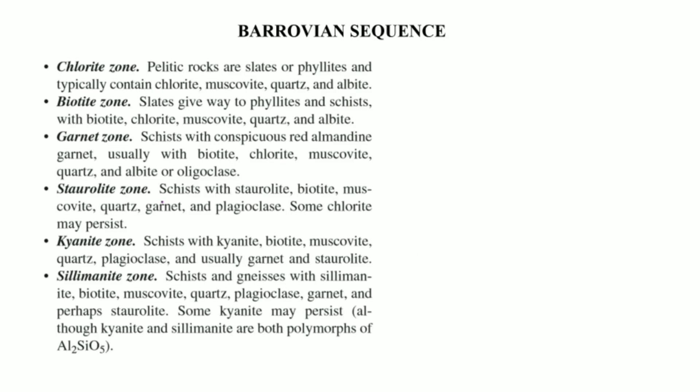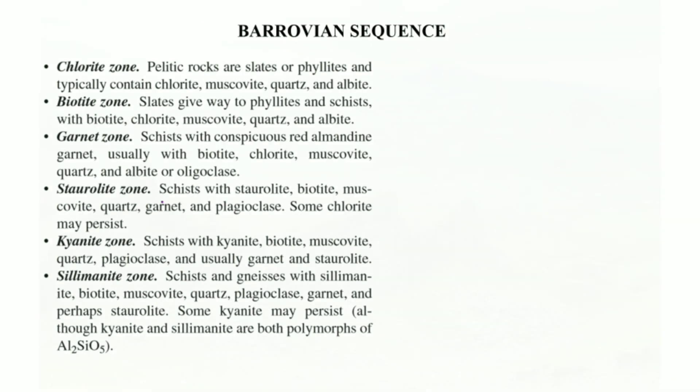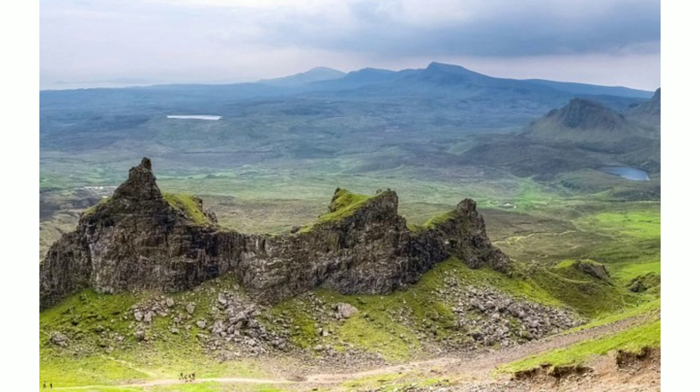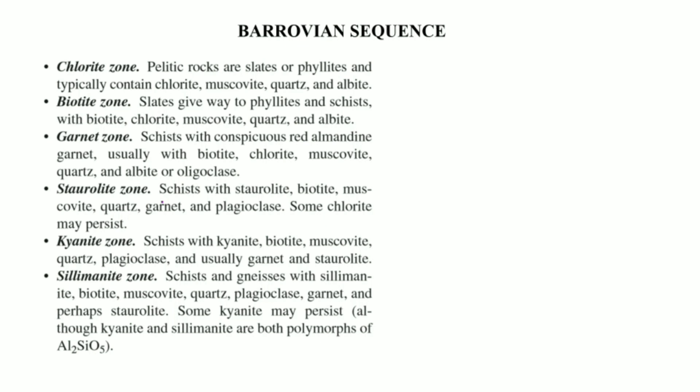The Barrovian sequence is a sequence of minerals which are found in the regional orogenic belts, that means the places where mountain building has occurred. This was first figured out by British geologist George Barrow, while he was working in the Scottish Highlands. So before going to the sequence, let us understand some geotectonic history of the Scottish Highlands.